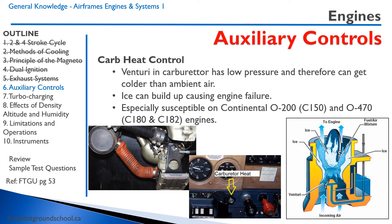Here's the carburetor heat control on a Cessna — it's right beside the throttle. When we select carburetor heat on, it opens a valve allowing hot air from the exhaust shroud to flow into the carburetor. You can also see a diagram showing how carburetor ice forms around the butterfly valve. Aircraft with Continental engines, such as the Cessna 150, 180, and 182, are particularly susceptible to carburetor icing due to the design of the engine.